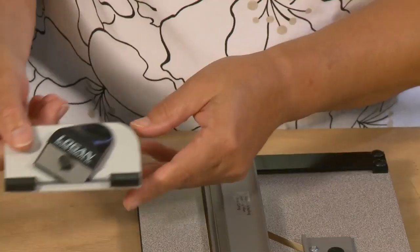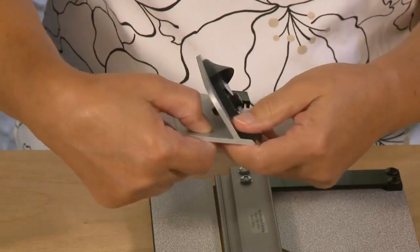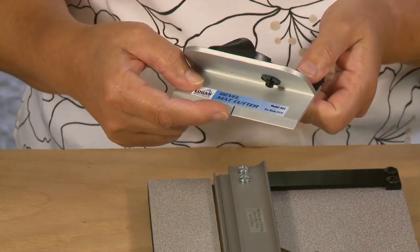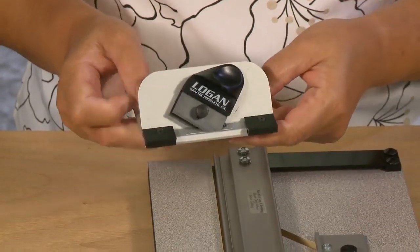Also included is a push-style bevel cutting head with retractable blade holder, start and stop indicator, and nylon guides that allow it to hook to the side of the guide rail.